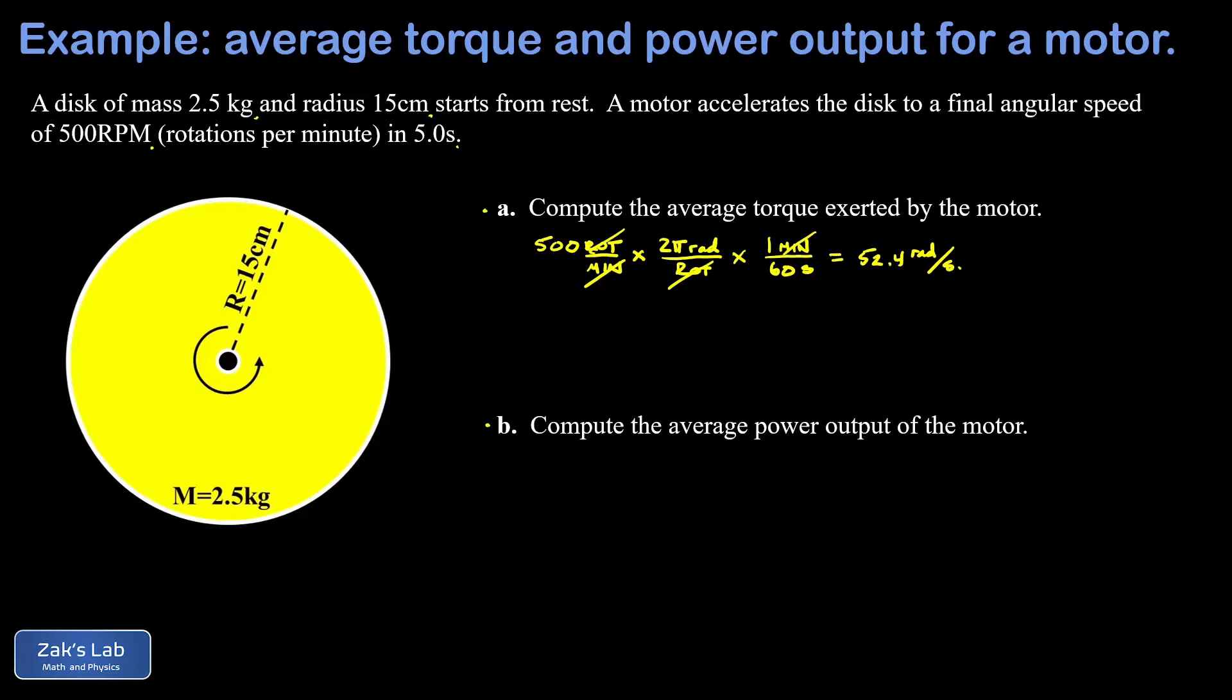Now the strategy for part a is that I want to get the average angular acceleration for the disc. I know it started from rest, I know the final angular velocity is 52.4 radians per second, and I know how long it took for the acceleration process to occur. So that rate of change in the angular velocity, that's the angular acceleration that I'm looking for, and then we'll relate that to torque with the rotational equivalent of Newton's second law.